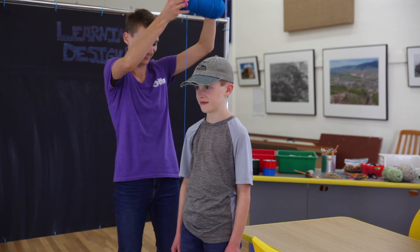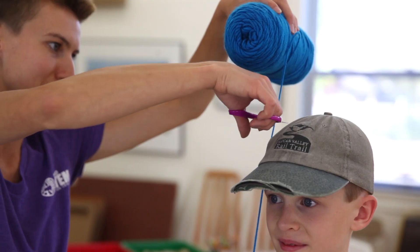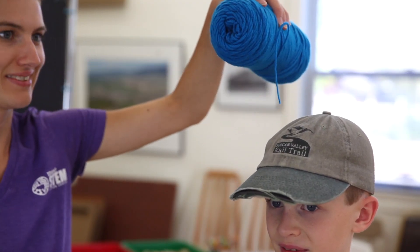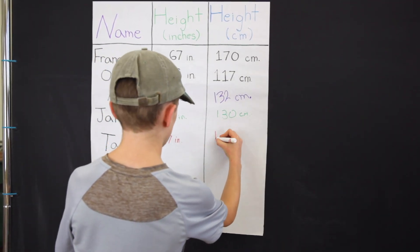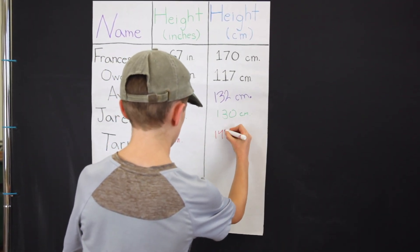So, I plan to cut a piece of yarn for each child that is as long as they are tall, and let that be the first thing that they measure. We'll record their height in both inches and centimeters, so they can see the difference between the two.